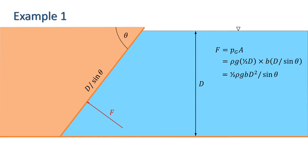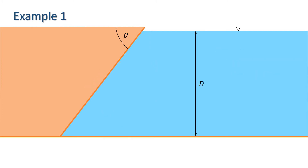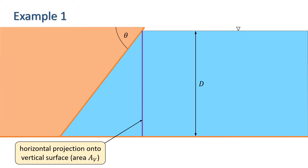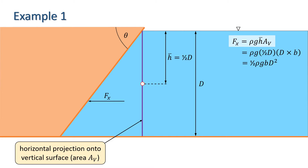We also know that the force will act perpendicular to the wall, and will act through a point at a depth two-thirds d from the water surface. However, the point here is to use the method developed earlier, so we will calculate first the horizontal and then the vertical component of the force, and then compare results obtained using both methods. To calculate the horizontal component of force, we first create a vertical projection of the surface, which is the purple line shown here. The equation for the force is Fx equals rho g h-bar times Av. In this case, h-bar will be one-half d, and Av will be d times the width, giving us one-half rho g b d squared. Equivalently, we could calculate the volume of the pressure prism shown here, which of course would give us the same answer.